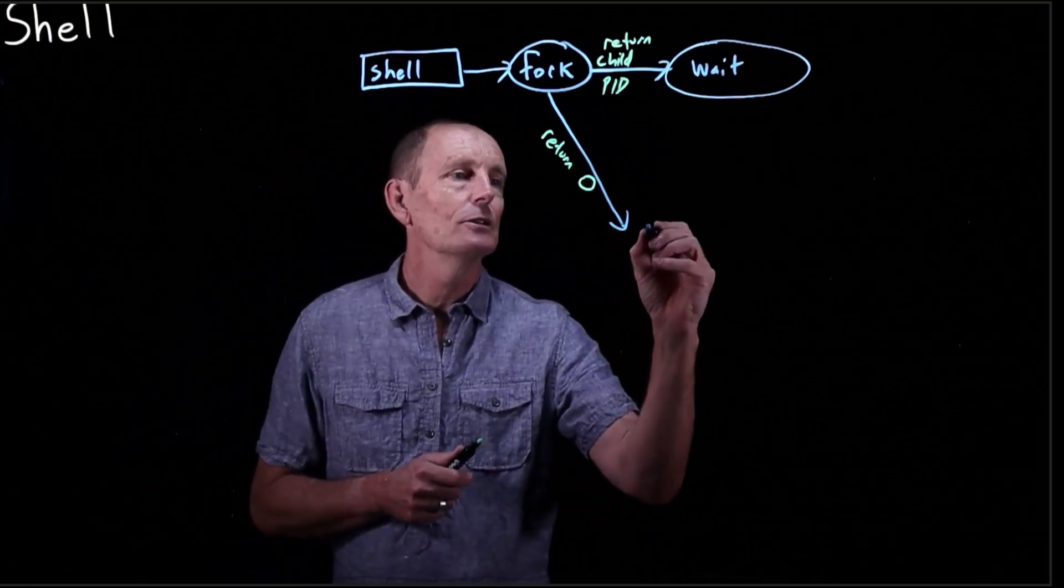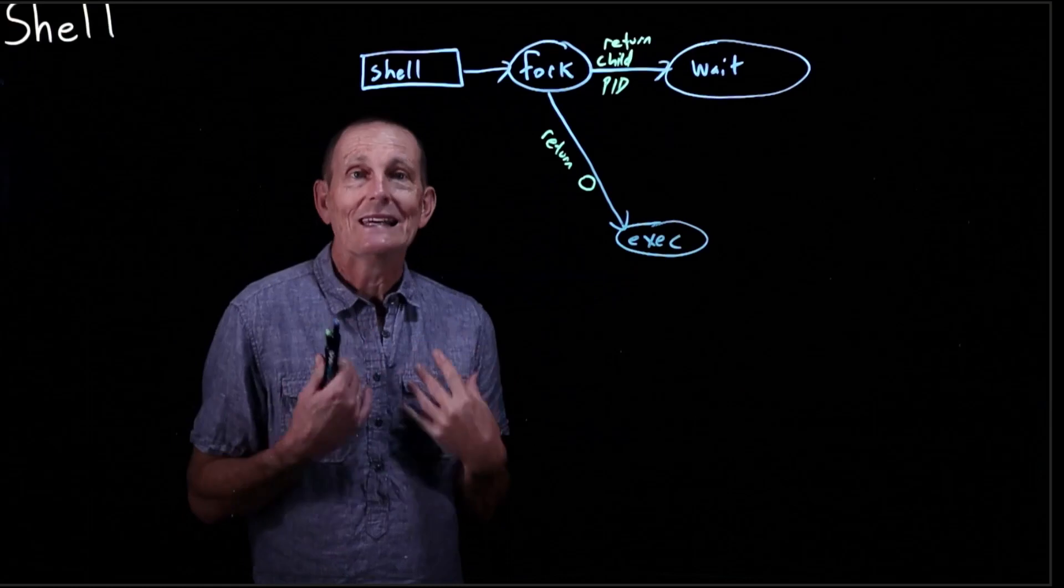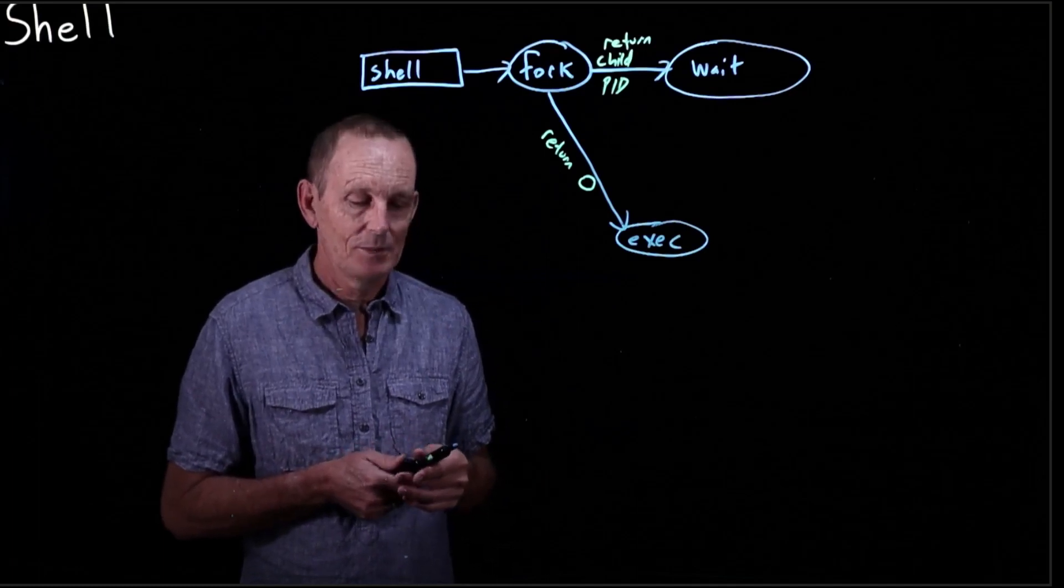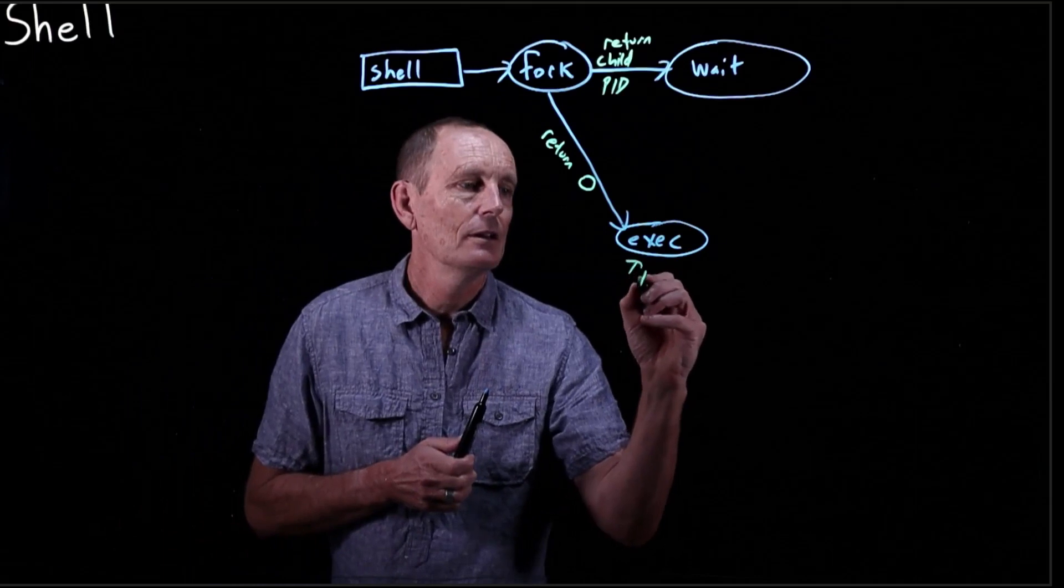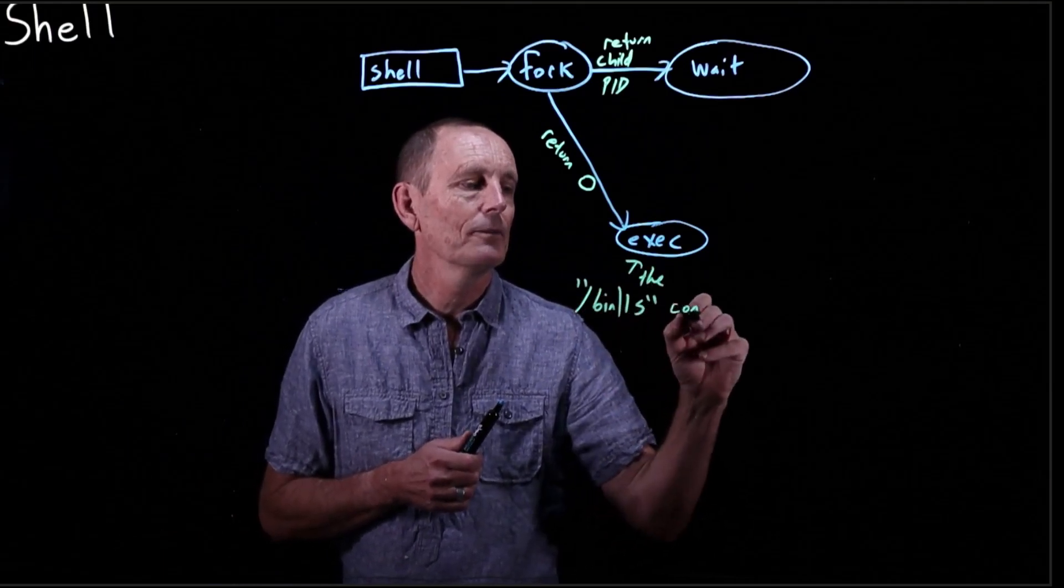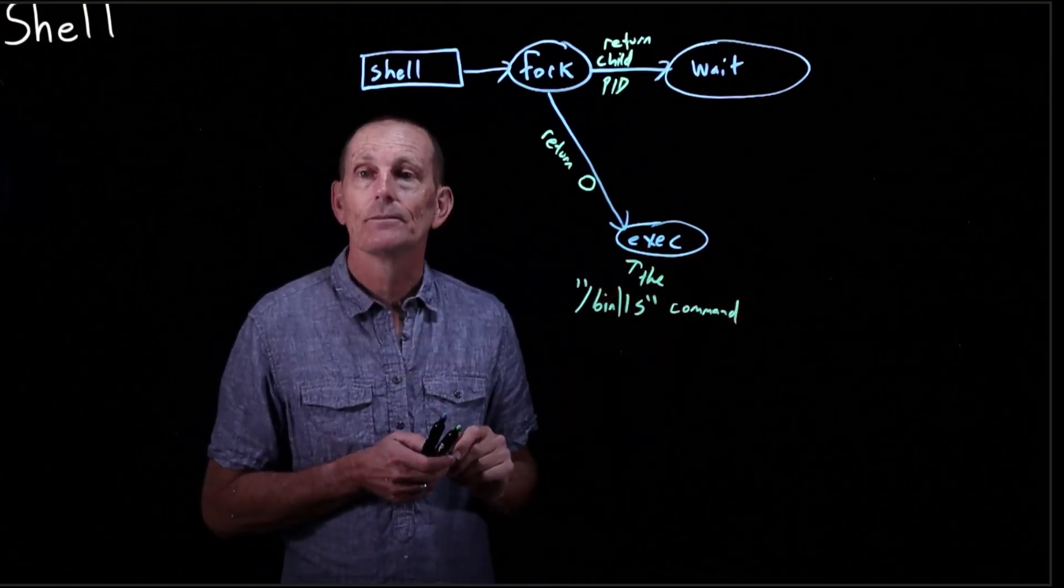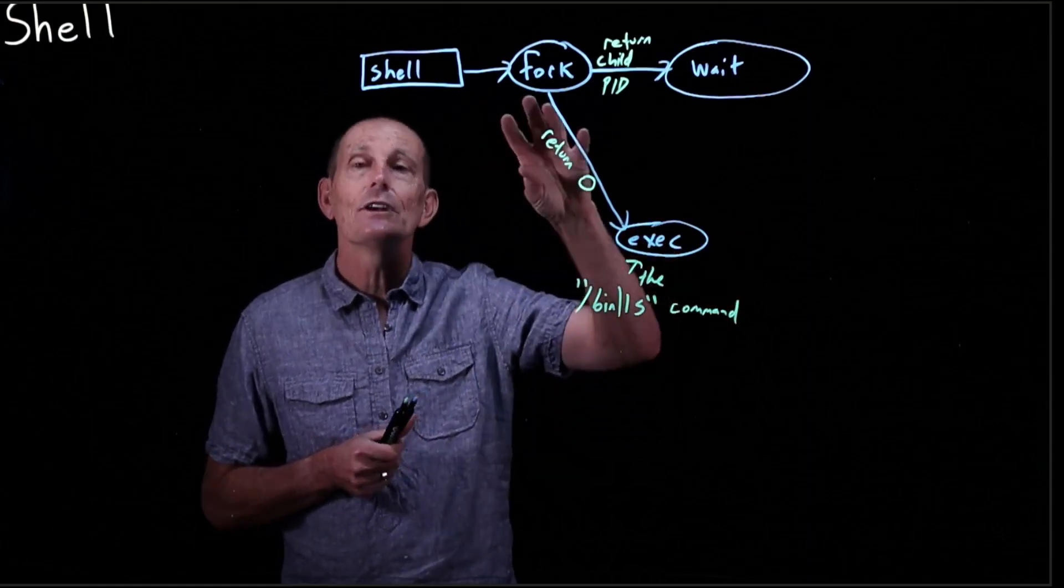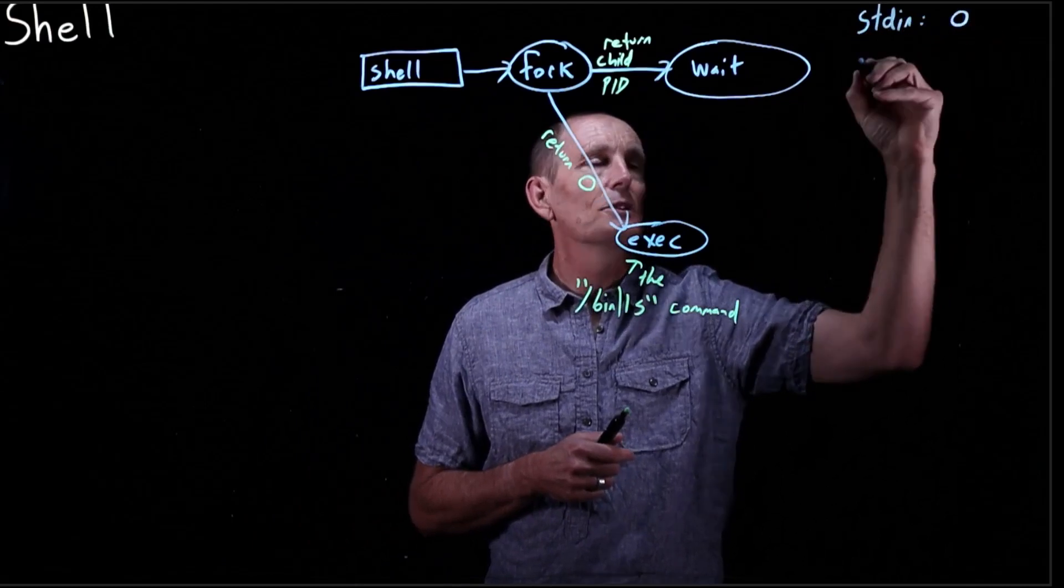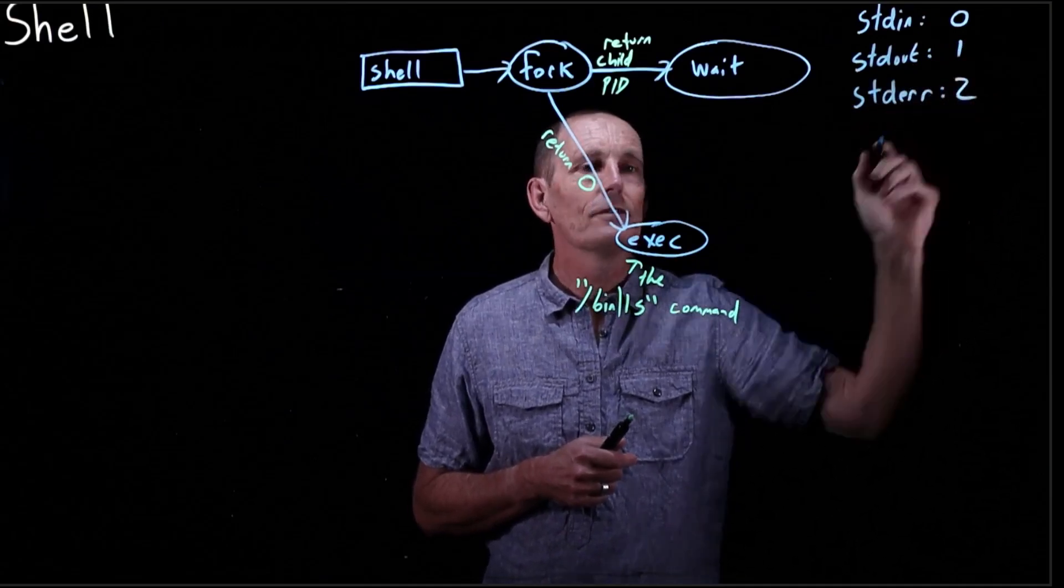So what's the child going to do now? The child is going to do an exec. Exec says, I am a process. Replace me. So take over this process with another executable. So in this case, it's going to be executing the ls command. So /bin/ls command. So that is going to be what starts executing. So ls is going to start executing. It inherits the same standard output as the shell had. So in Unix, standard in is file descriptor zero, standard out is file descriptor one, and standard error is file descriptor two.